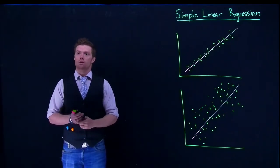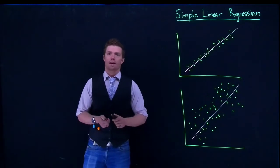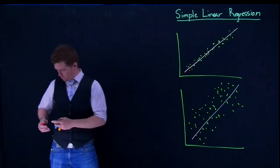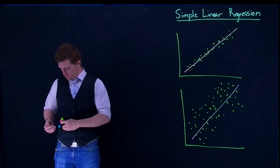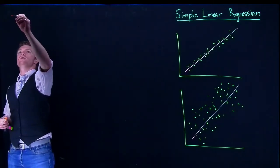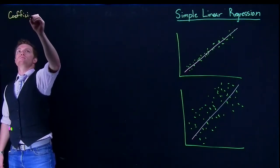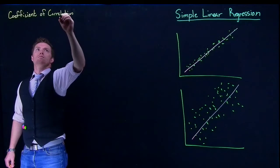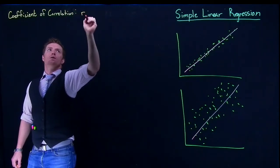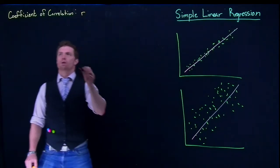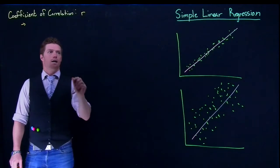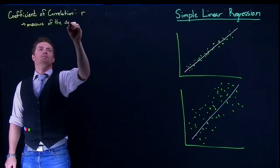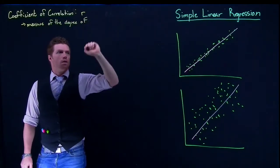And there is a new variable that we can calculate and that we can find that will help us determine whether or not our model is any good. And it actually comes in two different flavors. So the first thing that we're going to talk about is the coefficient of correlation. The coefficient of correlation is just known as r. It simply is just a measure of the degree of linear relationship.